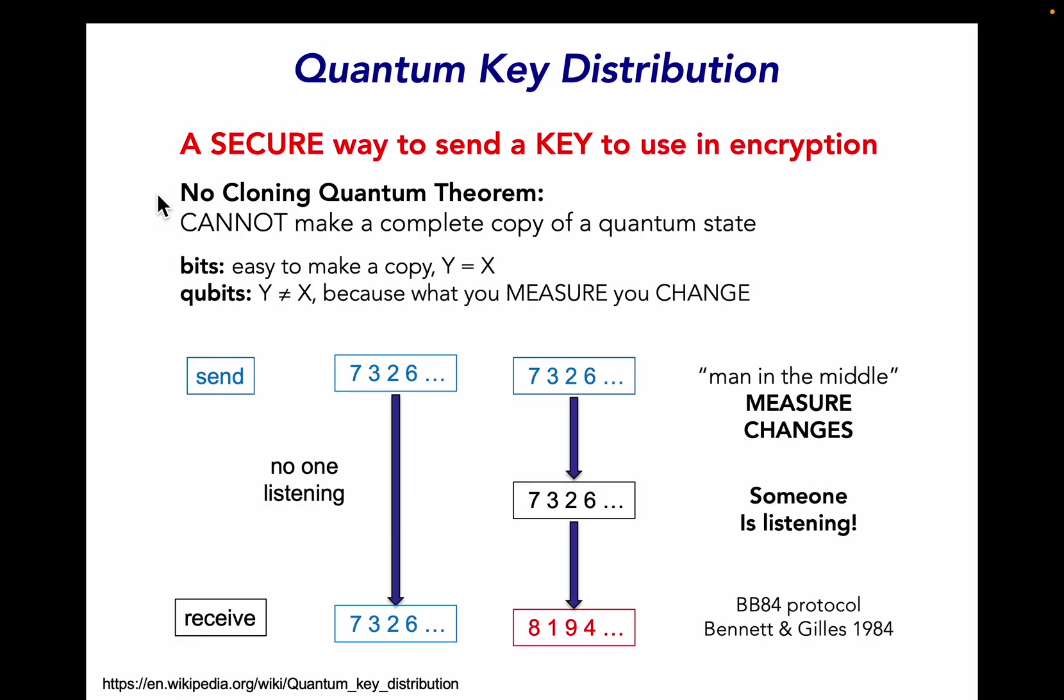One of the odd things of quantum mechanics is the no cloning theorem. We cannot make a complete copy of a quantum state. If we're dealing with a conventional computer with bits it's easy to make a copy. But we can't do this in qubits because once you measure something you change it forever. If we're sending what will be a number that corresponds to a cryptographic key, if no one is listening we receive the same number. But if someone is trying to do a man in the middle attack, if they read the numbers being sent and then try to resend them to fool us, it doesn't work because their act of measuring the numbers forever changes them and there are ways of detecting that change. That's called the BB84 protocol.